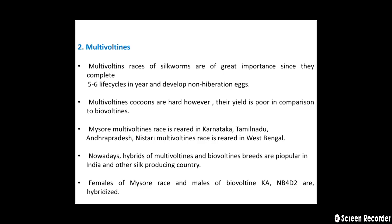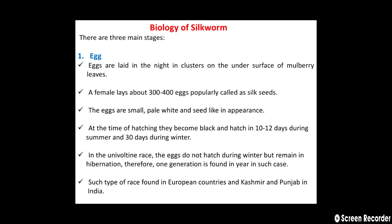Females of the Mysore race and males of bi-voltine breeds — Ka, Nb4, and D2 — are hybridized. The next point is the biology of silkworm.